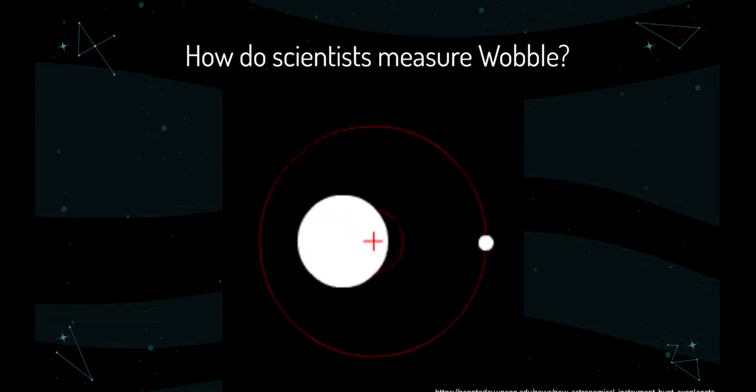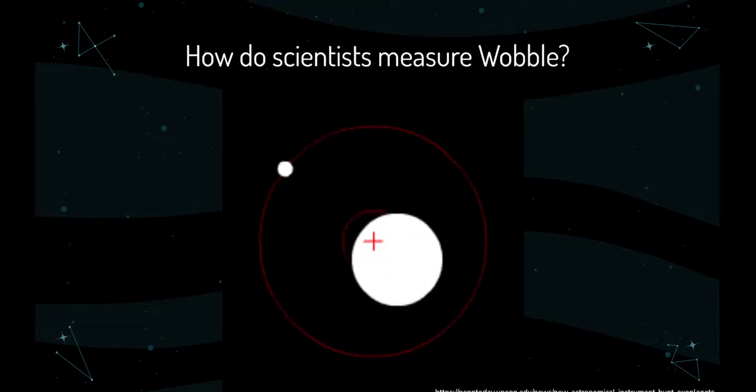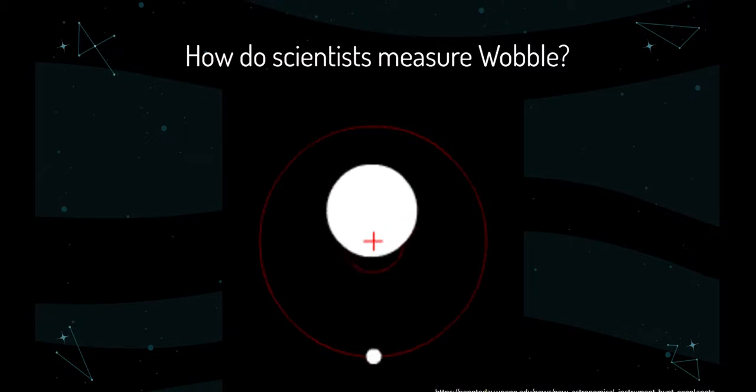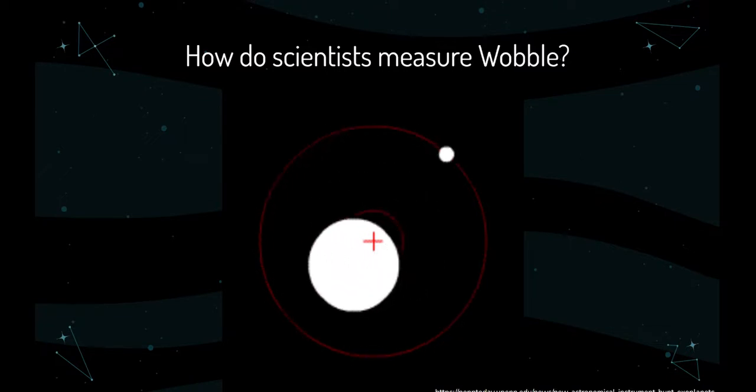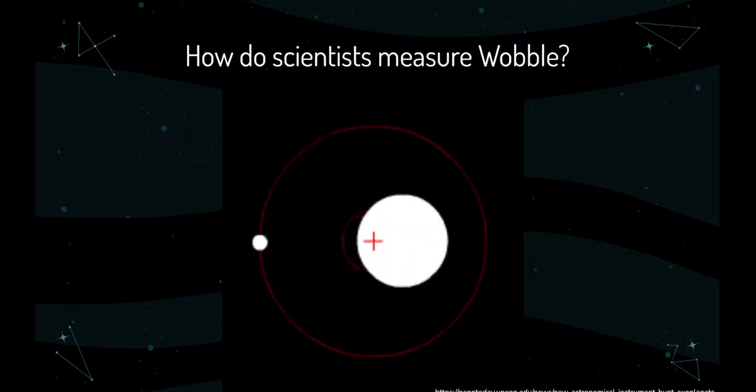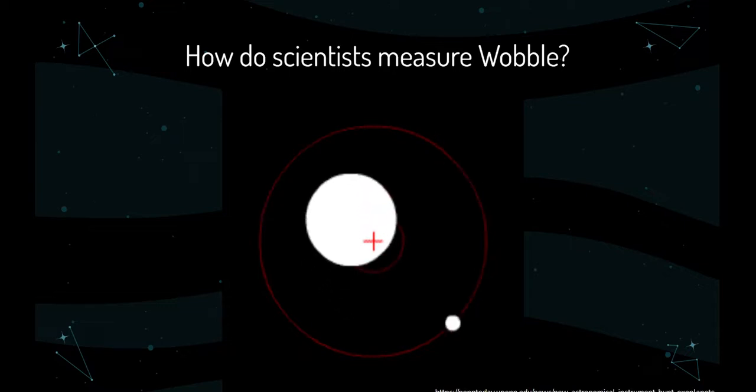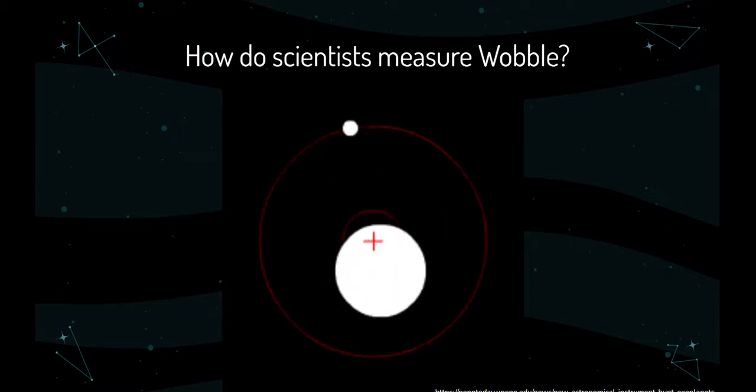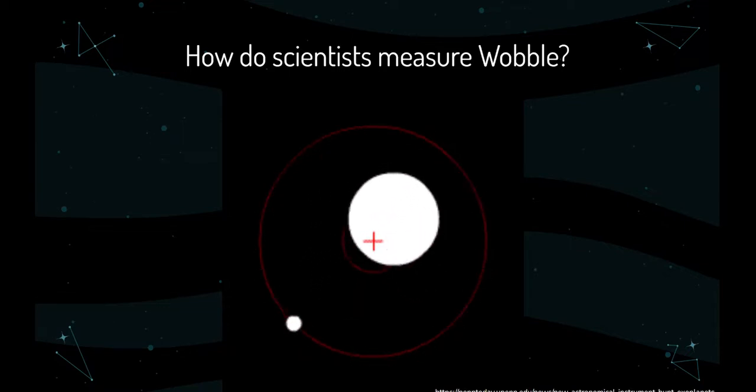So even though we can't see the star in motion, we can detect the tiny change in its light pattern as the planet causes it to swing closer and further from us. This method works best when the planet is directly along our line of sight, but it can also give a detectable signal when it's not perfectly aligned.